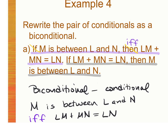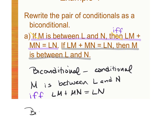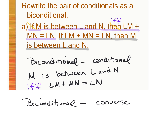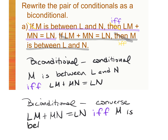You can also write a biconditional based off of the converse. Remember, you can only write a biconditional when both the conditional and the converse are true. So using the converse — drop the 'if,' drop the 'then,' and put 'if and only if' in its place: LM plus MN equals LN if and only if M is between L and N. Those are your two biconditionals based off of what was given, because both the conditional and the converse were true.